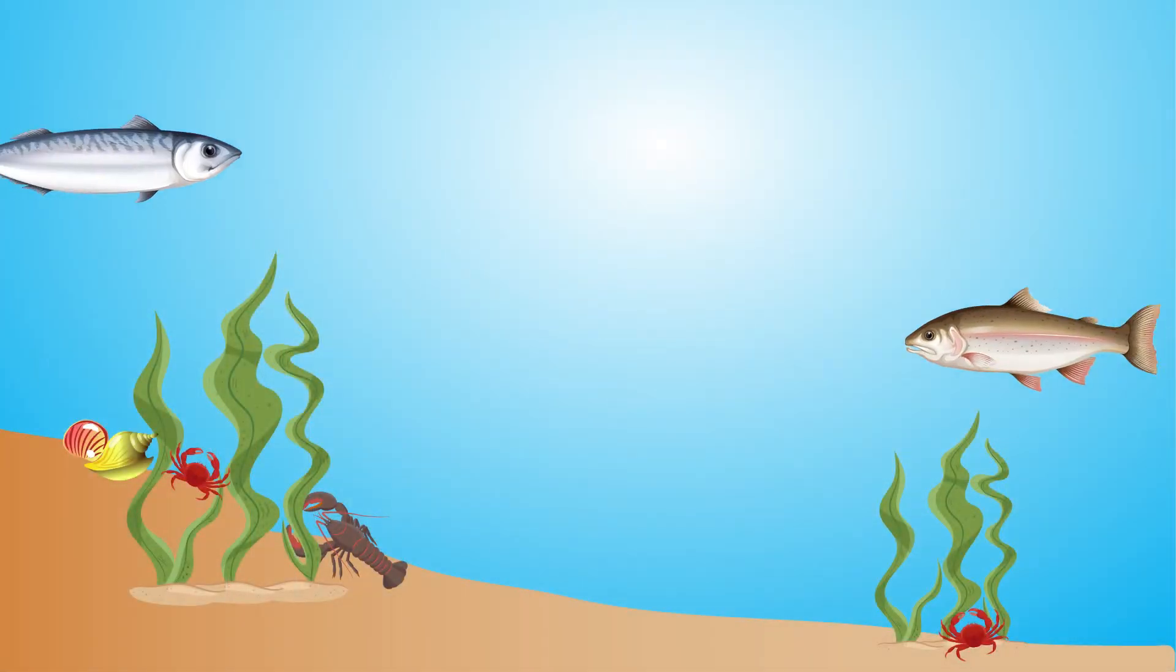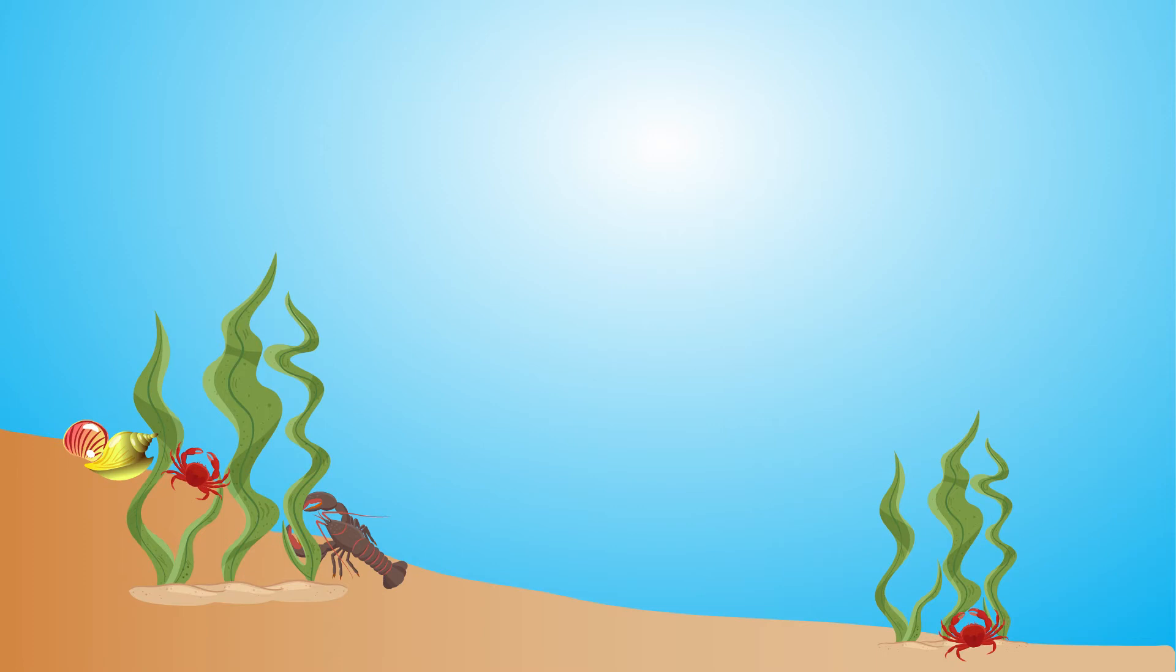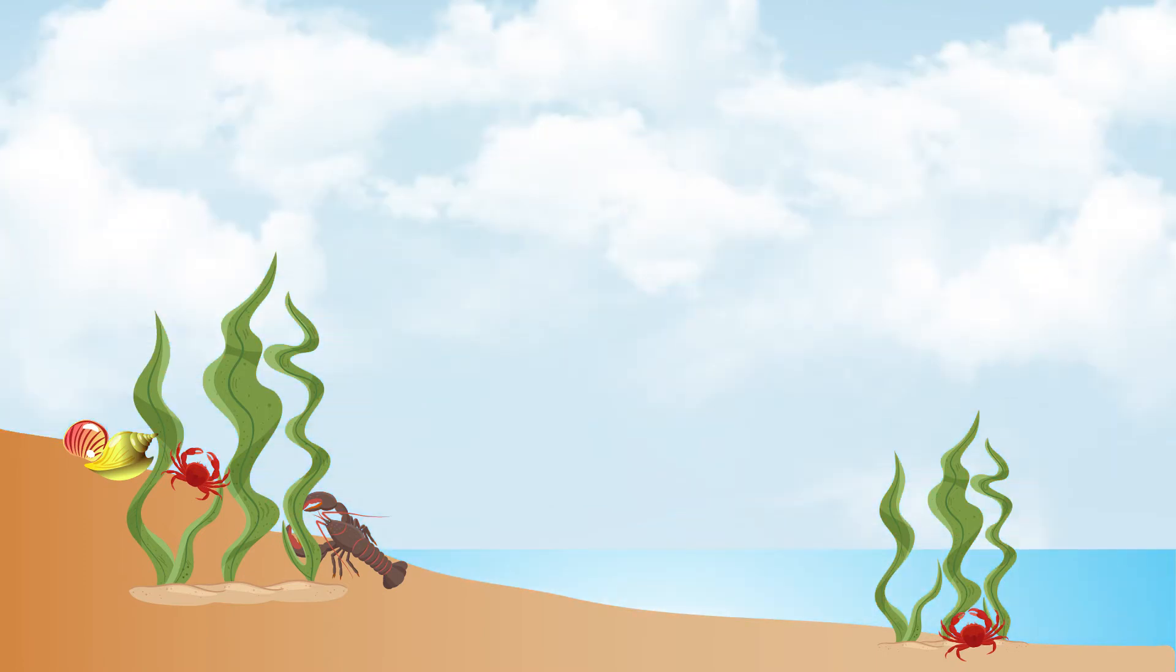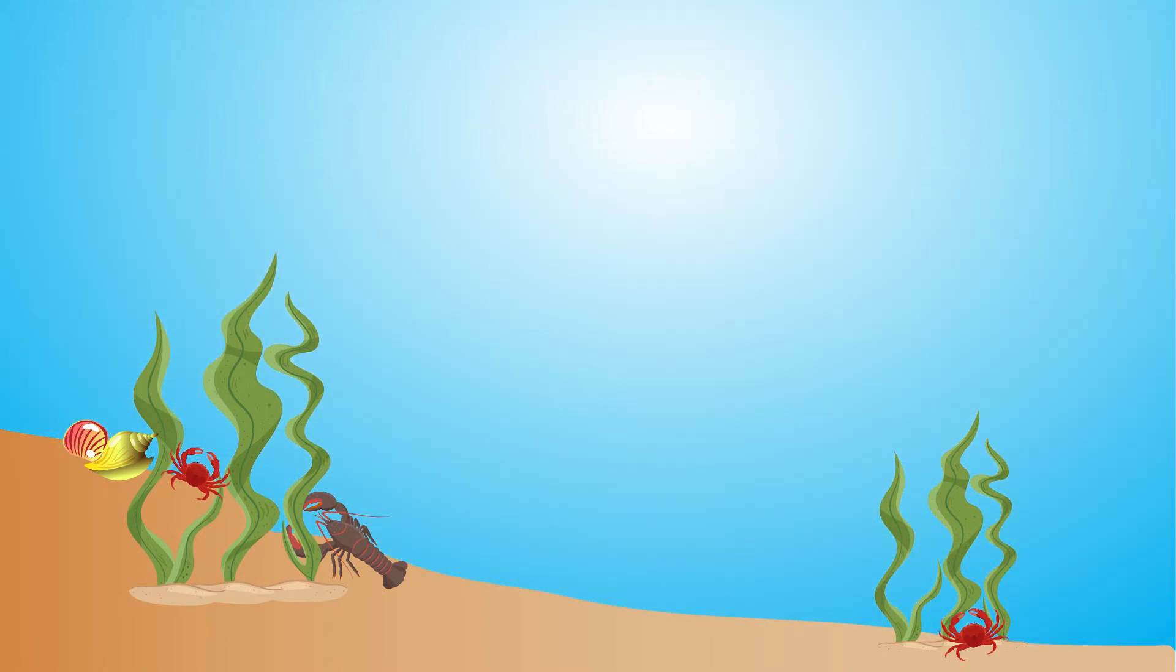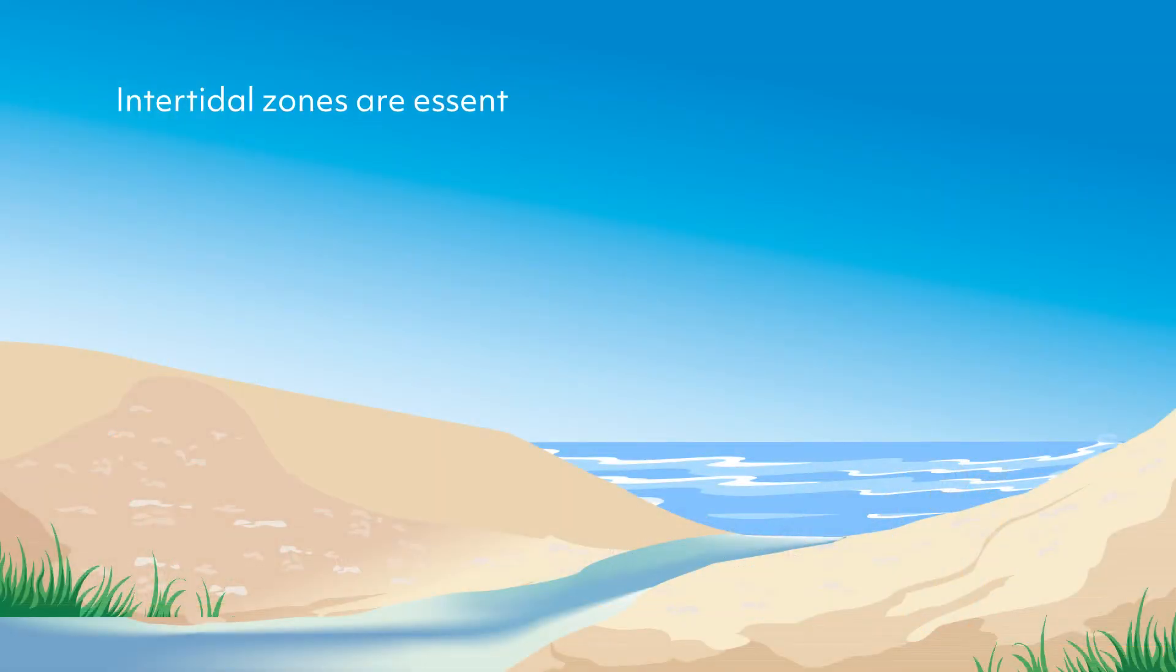Intertidal zones are areas of seashore that are covered at high tide and uncovered at low tide. These diverse areas support thriving populations of unique animals and plants and act as nursery grounds for many deepwater species. As such, intertidal zones are essential to the overall health of the oceans.